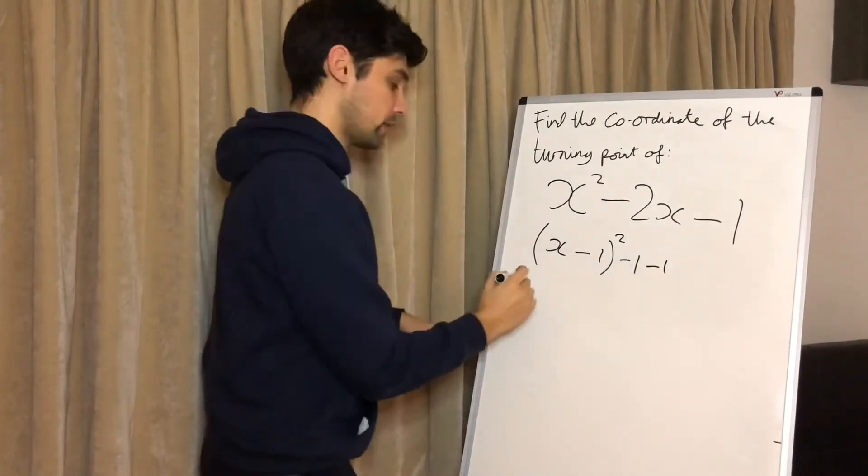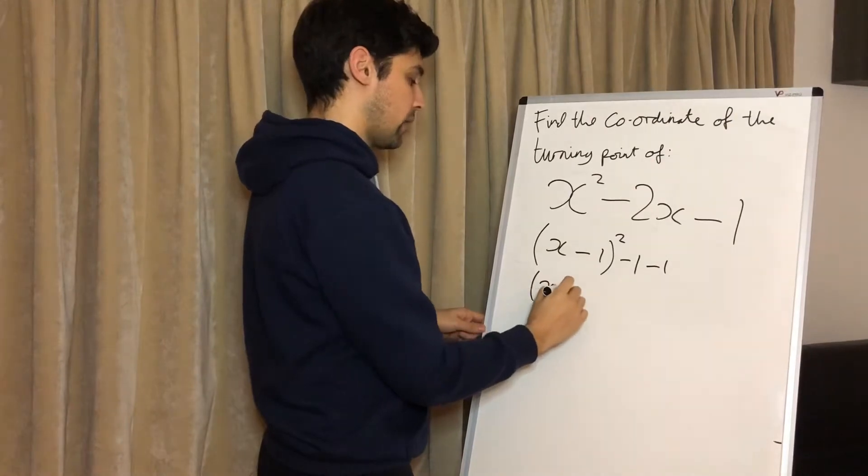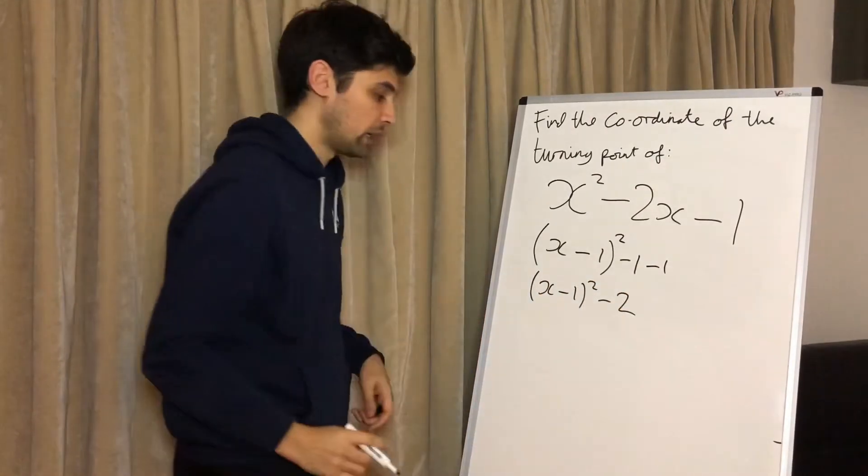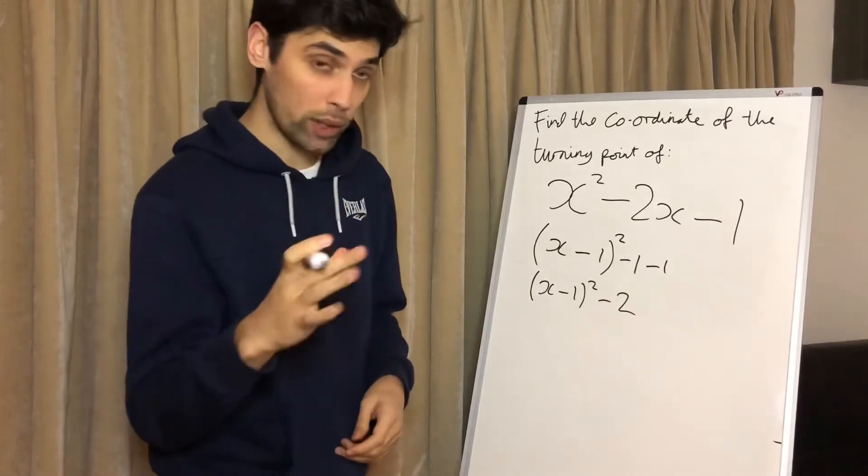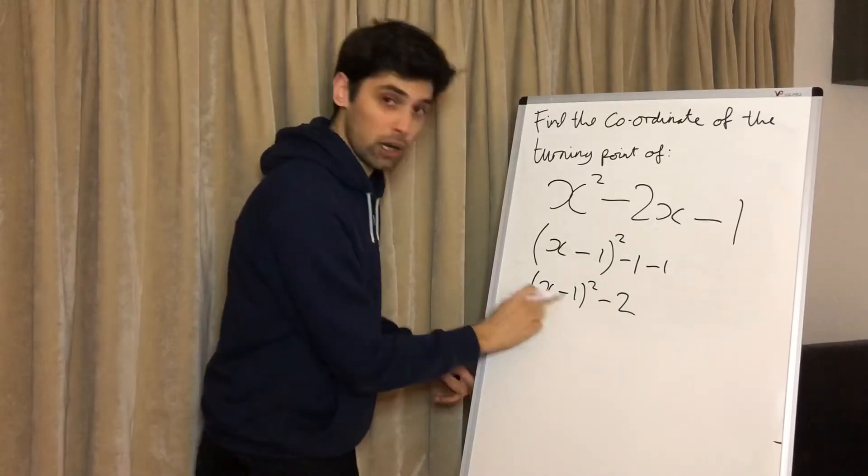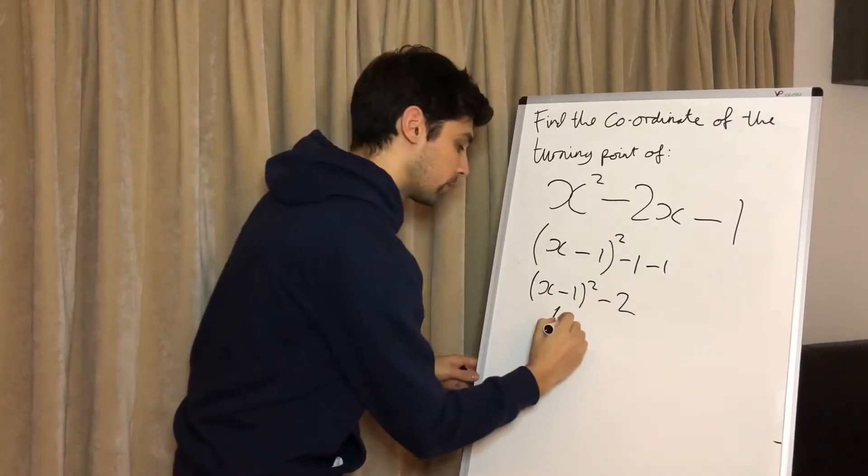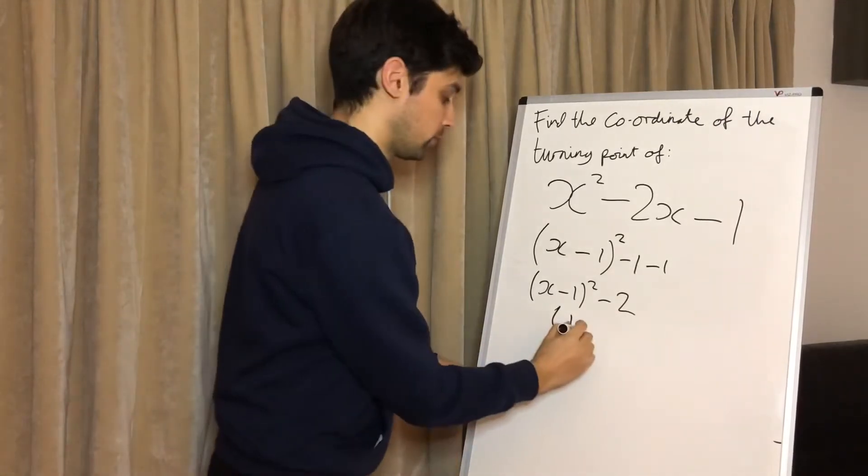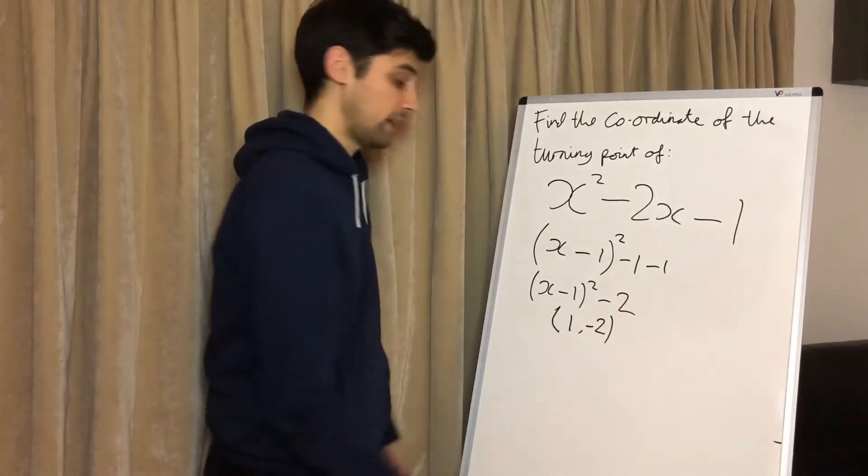Now we're going to tidy up the outside to give us (x - 1)² - 2. The coordinates of the turning point are this number with the sign flipped for the x-coordinate and this number for the y-coordinate. And that is it.